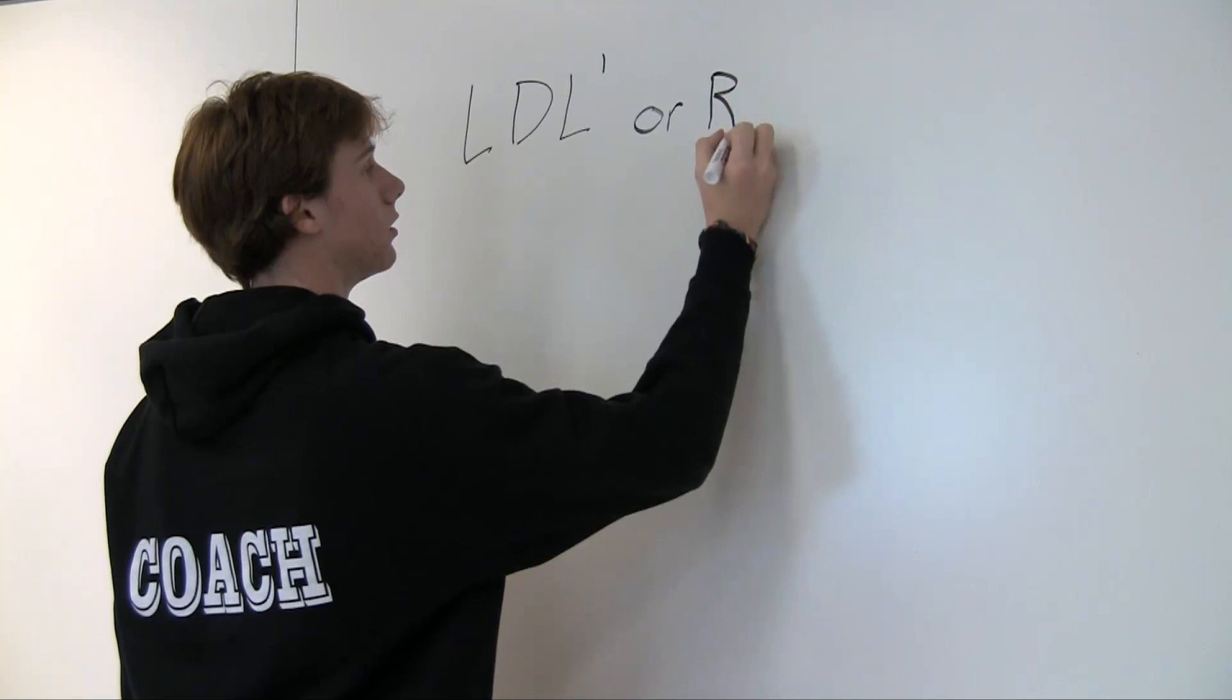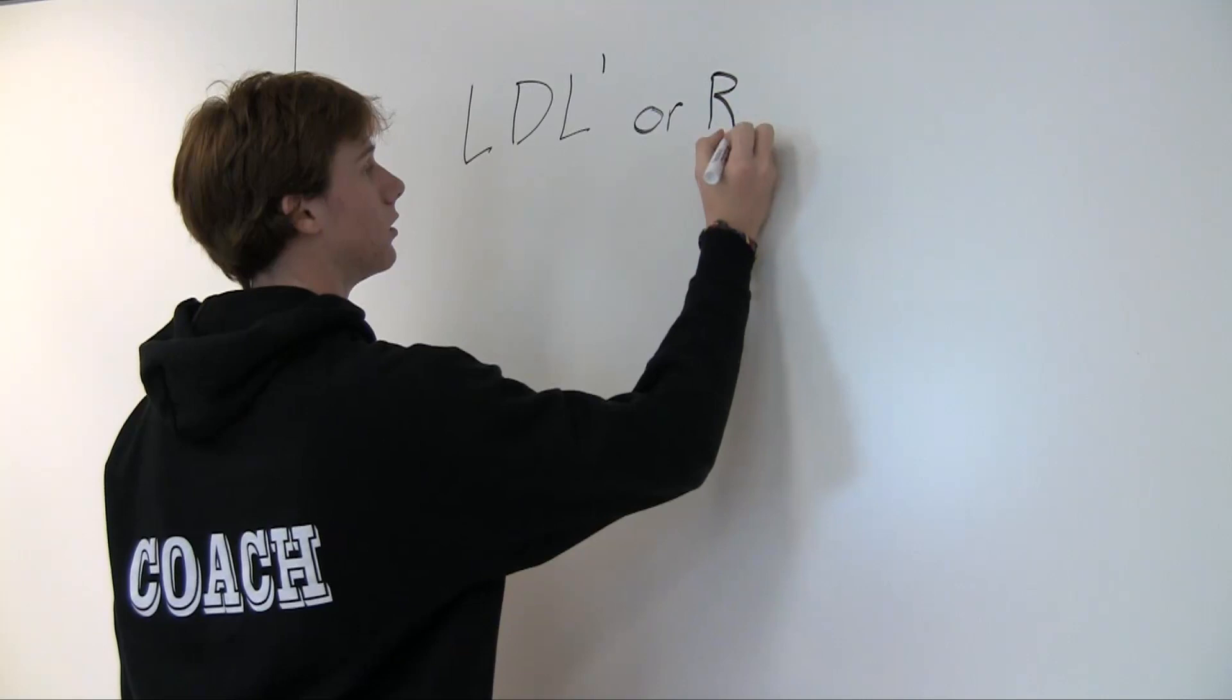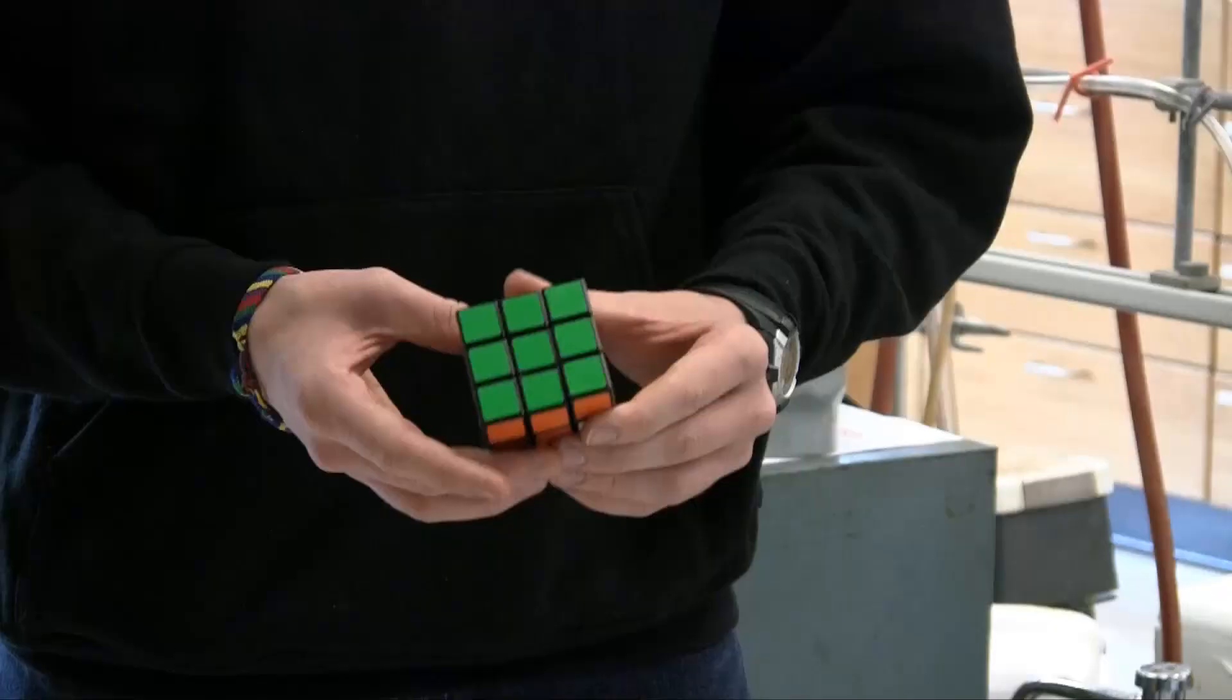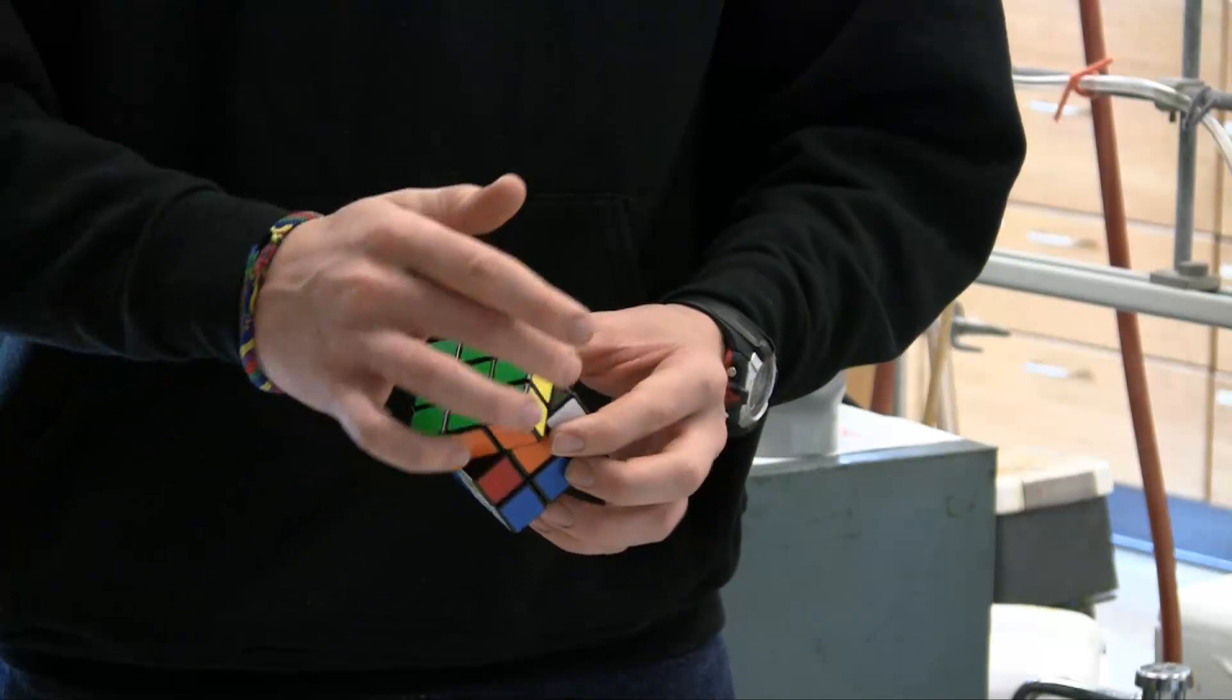Or if it's on the other side you can go right inverse, down inverse, and right. And now I have all the correct colors in their positions on the top layer.